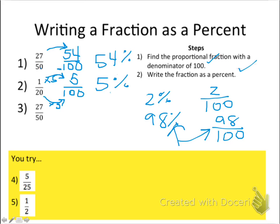Hopefully you've tried it on your own. 27 out of 50, turning it into a percent. Let's do it together now. My first step is to find the proportional fraction with the denominator of 100. So how do I get from 50 to 100? I multiply it by 2. 50 times 2 gives 100. Whatever I did to the denominator, I have to do to the numerator. So I take 27 and multiply it.